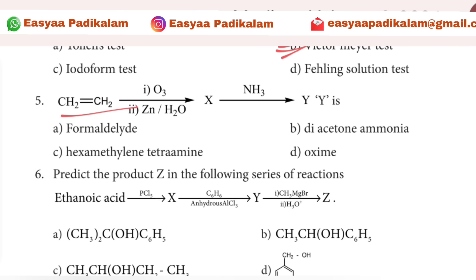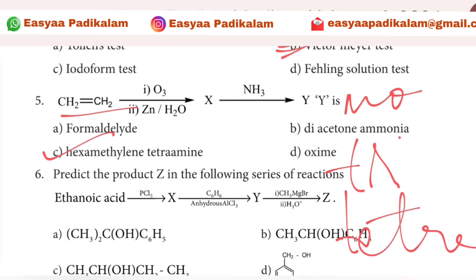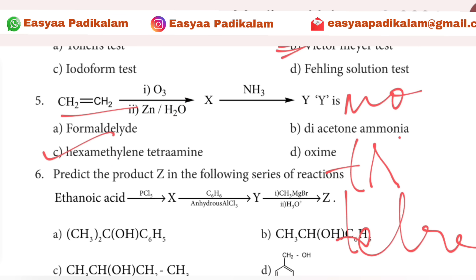Fifth question: CH2CH2. The answer is hexamethylene tetramine. Hexane is 6. Here is 3, here is 2. Three times two equals six. So the answer is hexamethylene tetramine.